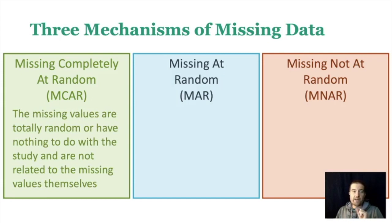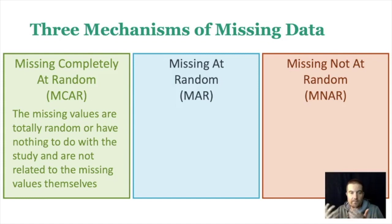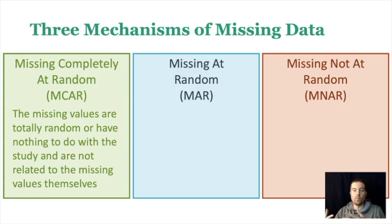Missing completely at random (MCAR) is where the missing values are totally random, have nothing to do with the study, and are not related to the missing values themselves. This is the best case scenario — the missingness just kind of happened. For example, someone taking a study might just happen to overlook a question. It wasn't because they didn't want to answer it, not because of some characteristic of themselves. It had nothing to do with the study or them — it's just random. You're not missing the information that would tell you why you're missing.